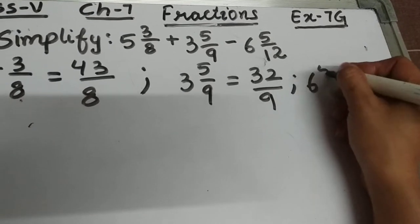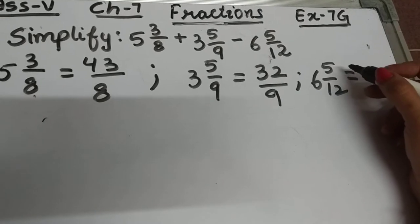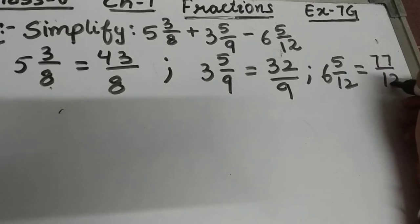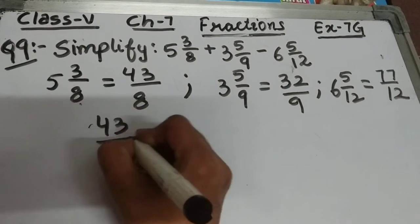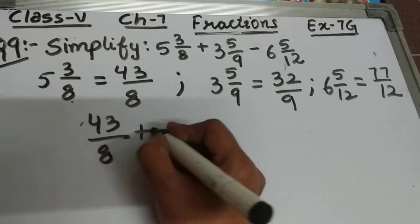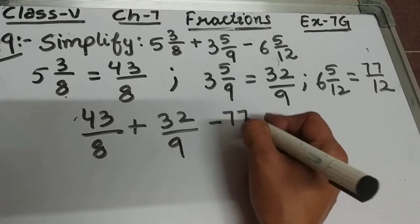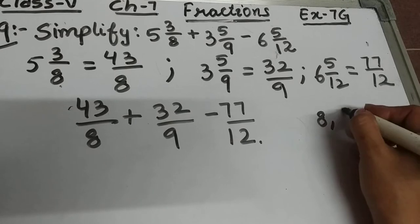6 5/12 will become 12×6=72, and 72+5=77, so 77/12. Now our question has become 43/8 + 32/9 - 77/12. Now take the LCM of 8, 9, and 12 because we have to make the denominators of all the fractions the same.